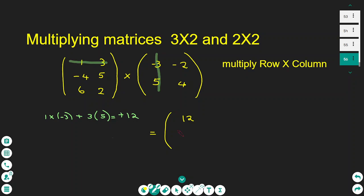Then we do exactly the same thing. We multiply the first row by the second column. So we do 1 times negative 2 plus 3 times 4, and this gives you 10. So we write here a 10.